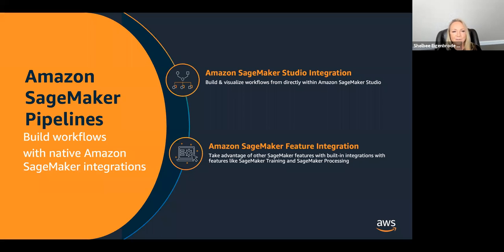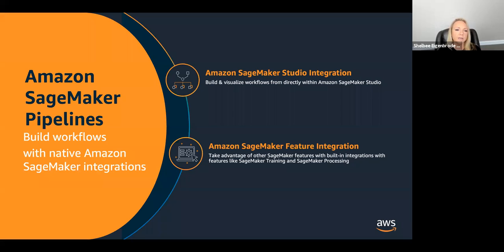Another feature of pipelines is SageMaker feature integration — it's purpose-built for SageMaker, so as a result it has all the integrations in place with a lot of those key SageMaker features you would expect. Integration with training, processing, and essentially all the services or features that you would need to use inside your tasks in your workflow to build out those particular steps.